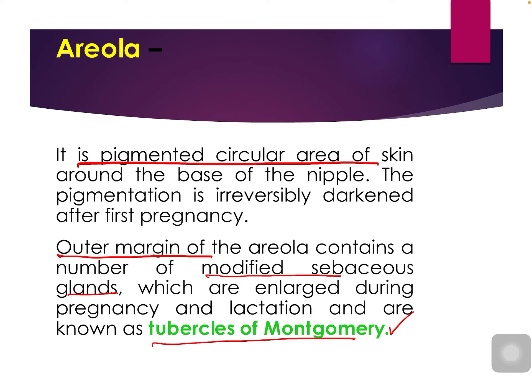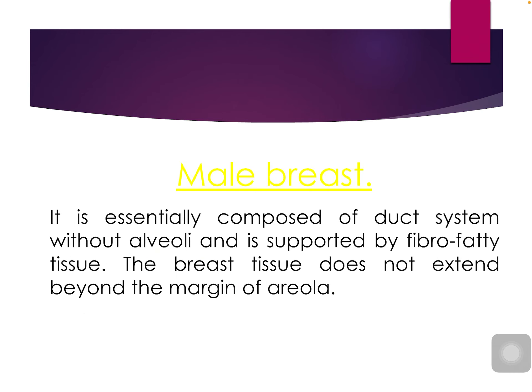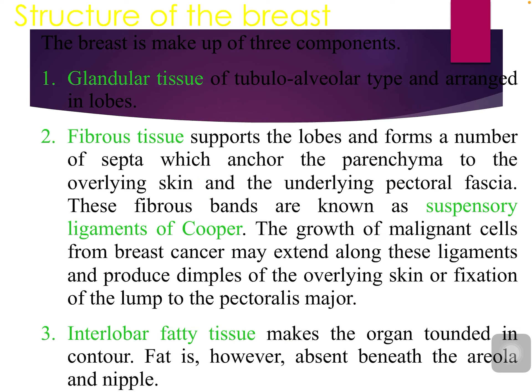The male mammary gland is composed of a duct system without alveoli, and it is supported by fibro-fatty tissue. The breast in the male does not extend beyond the margin of the areola. Now we will see the detailed structure of this mammary gland.